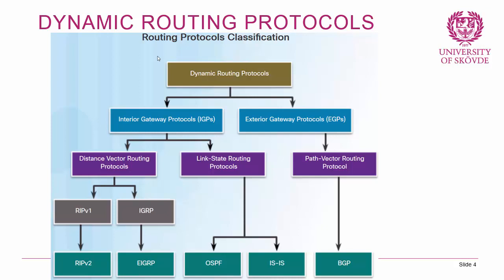Looking further at the different types of IGPs, we have distance vector routing protocols and link state routing protocols — we'll go through what they mean in the upcoming slides. For exterior gateway protocols, as far as this course goes, we only have one, which is a path vector protocol: BGP, which is beyond the scope of this course and will be discussed further in CCNA 4.